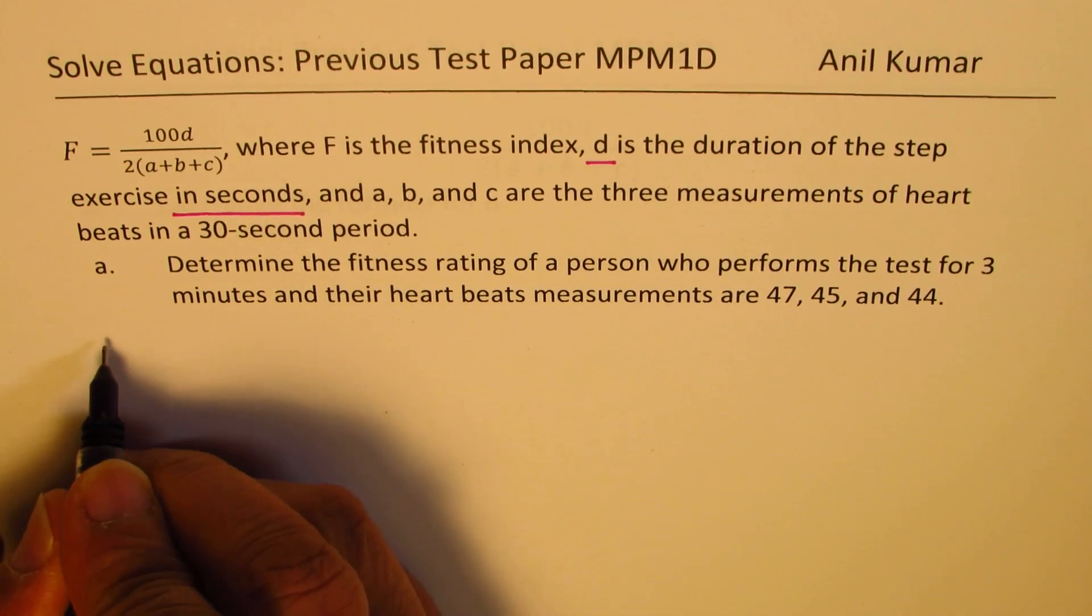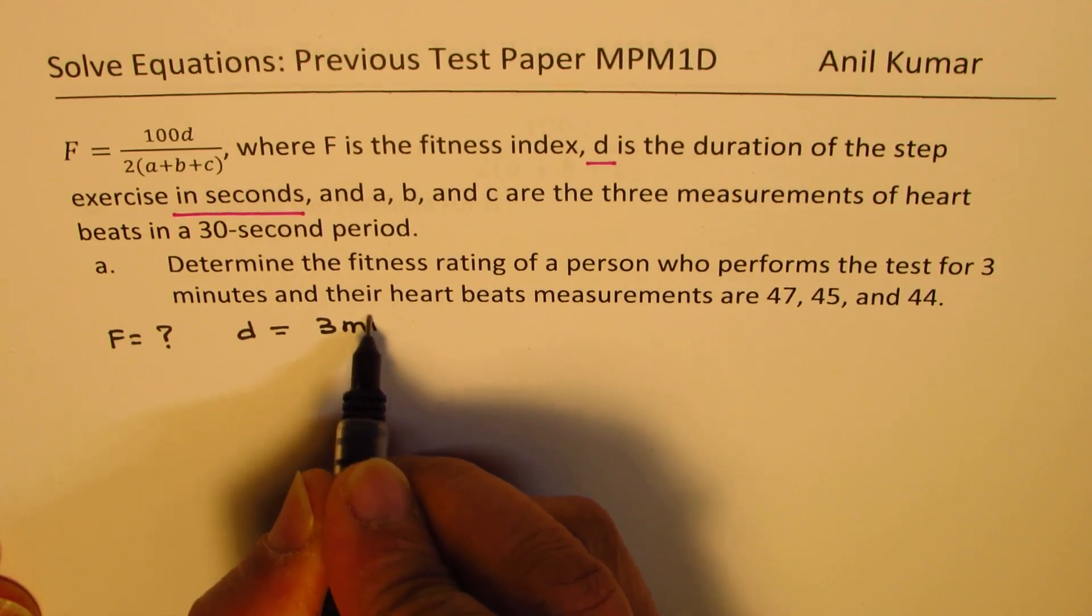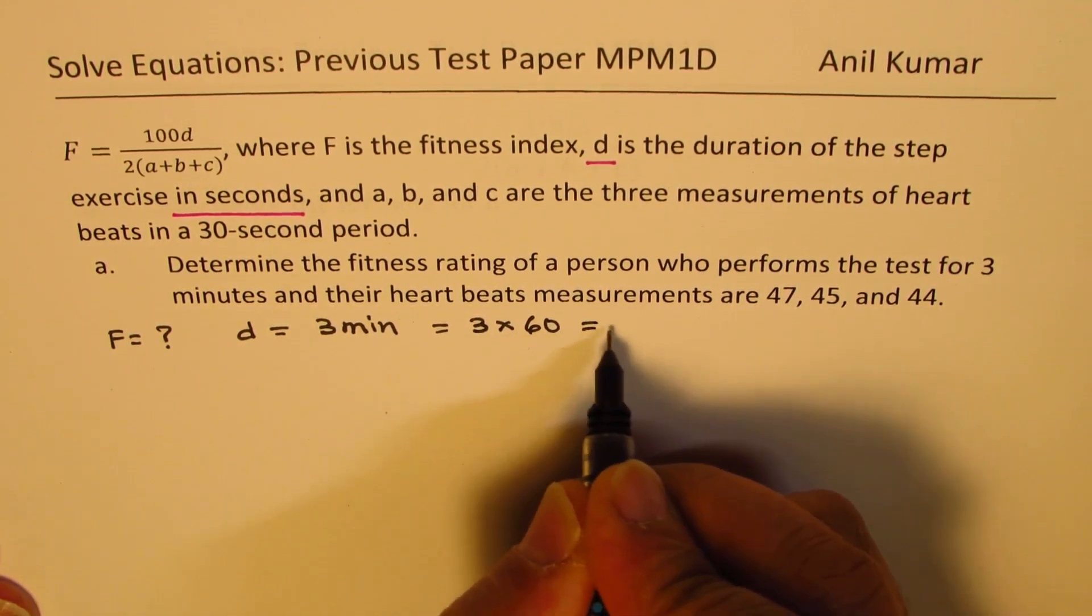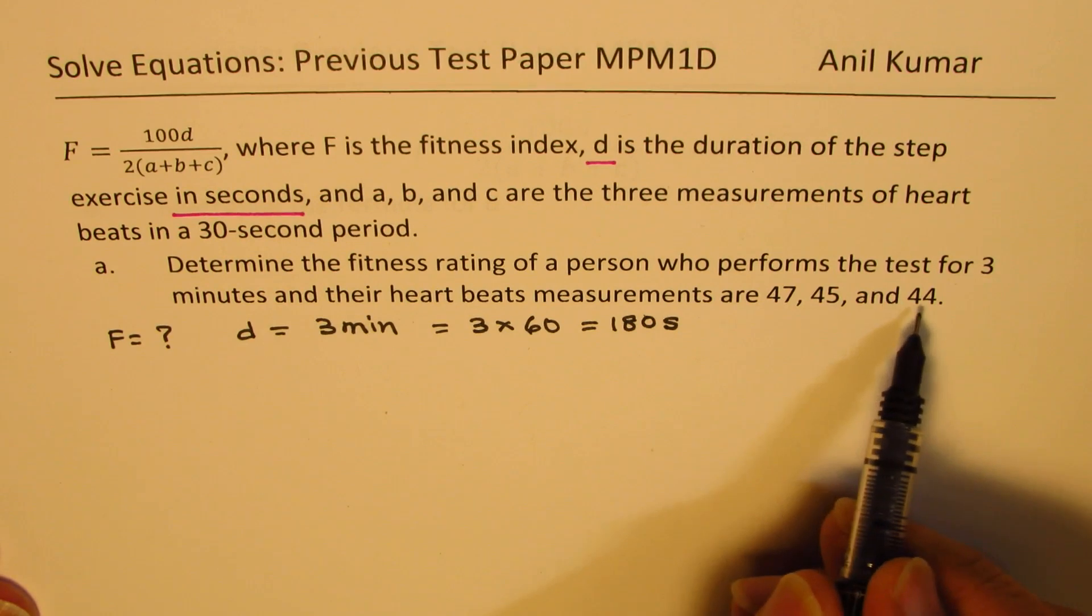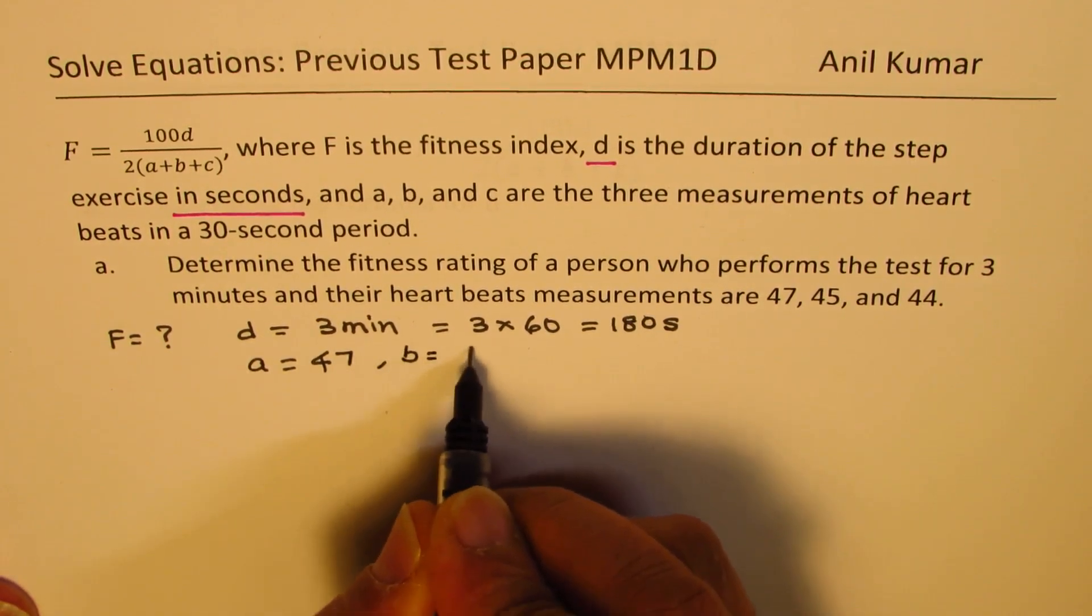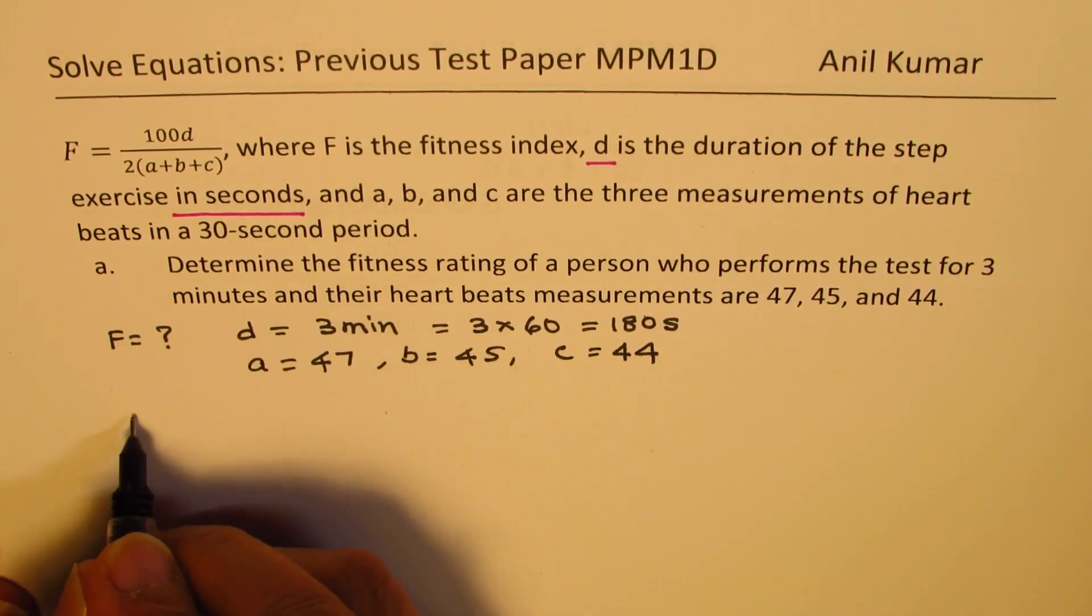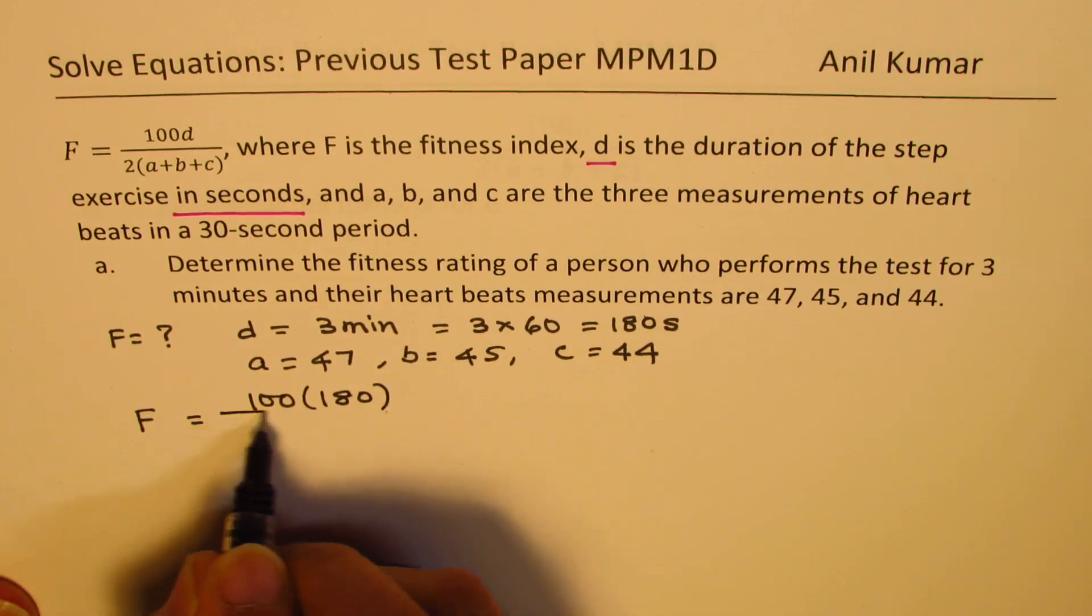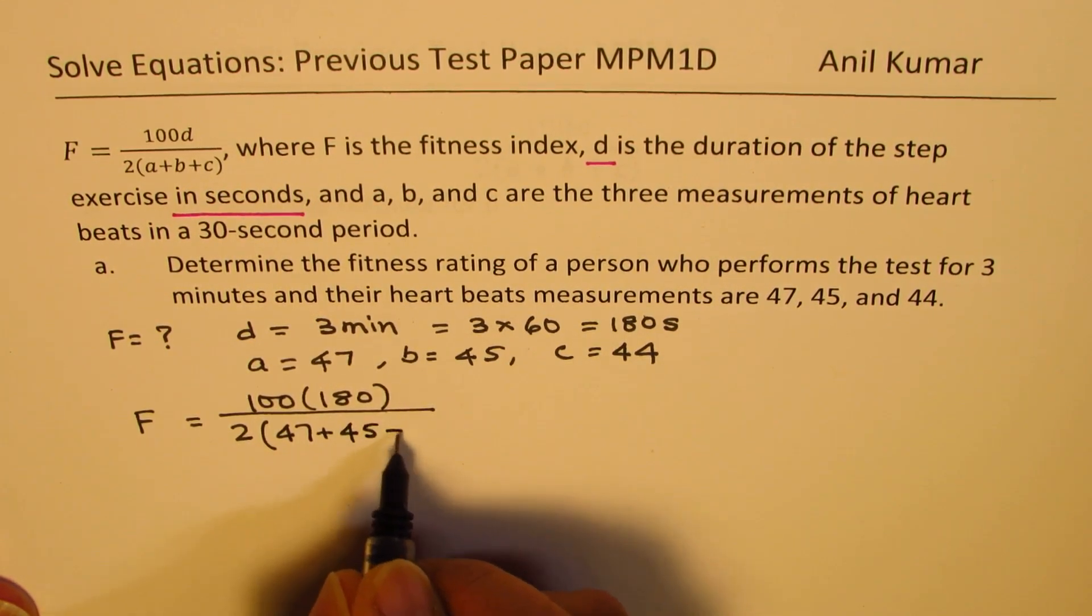So basically we need to find what F is. We know what D is. D is three minutes. D should be converted to seconds. So we'll multiply this by 60 to get 180 seconds. As far as A, B, C are concerned the values are 47, 45 and 44. So we can write A as 47, B as 45 and C equals 44 to calculate the value of F. Now it is a simple substitution into the formula to calculate. So it is 100 times 180 divided by 2 times sum of these three which is 47 plus 45 plus 44.